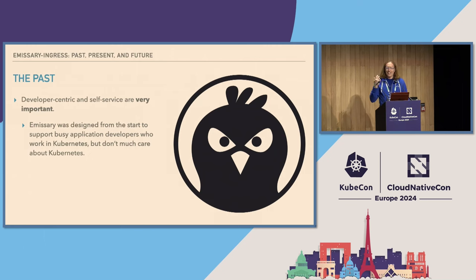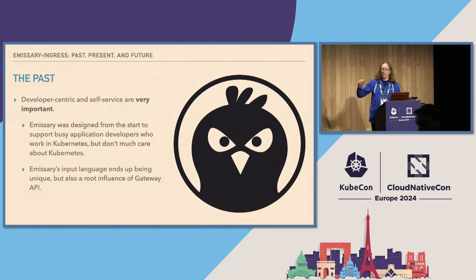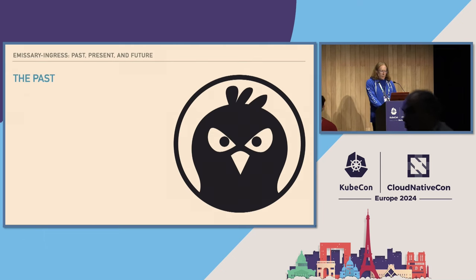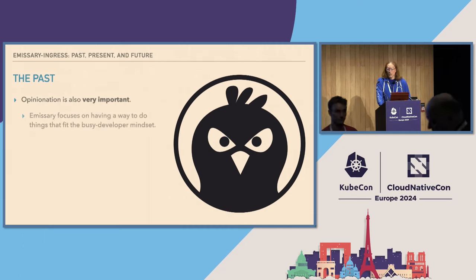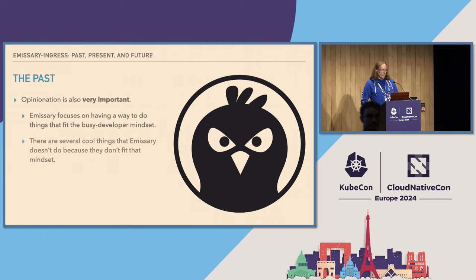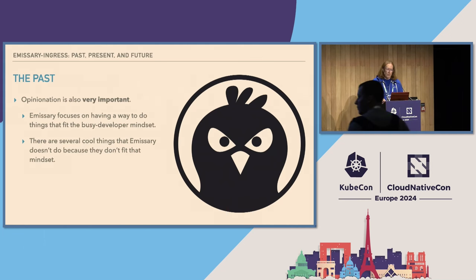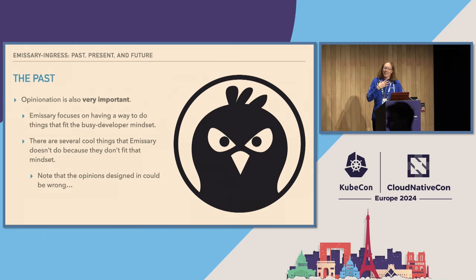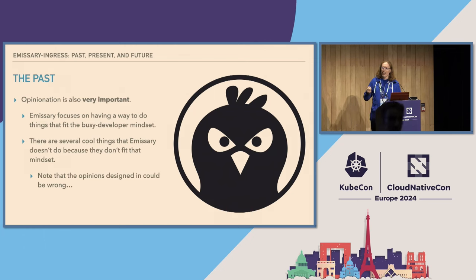That idea is also important for being able to develop at scale when you have lots of developers doing lots of things all at the same time. That idea also ended up being an influence on Gateway API later, which is one of the things I've found really fascinating. The bit about opinionation is also very important. There are a number of things we could have done in Emissary that we decided not to do because they don't fit this model of just wanting the developer to get stuff done without being a Kubernetes expert. The opinions we were holding when we made those decisions could be wrong, but opinionation is a thing.